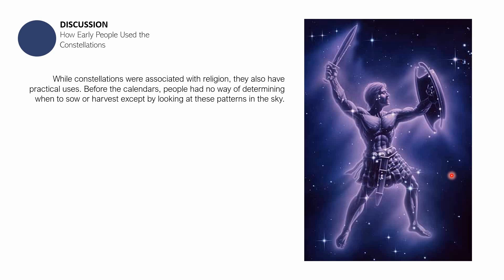Remember, the calendar was also invented at some point — it wasn't always there. Before anyone invented the calendar, the only way for people to know when to sow or harvest was by observing the sky. It was important because food production was done by the community. There were groups of people farming and tilling the land, and to maximize their harvest and know the best time to plant, they needed some sort of indication — and what better indication than the stars?